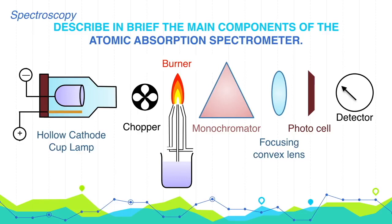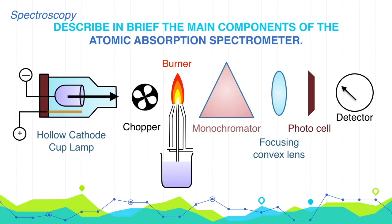Working. The cathode and anode are connected to the power supply, from which a potential of 500 to 1000 volts is applied. The gas in the bulb is ionized; cations move fast towards the cathode and remove atoms from it. These atoms strike gas ions, causing electron transitions from the ground state to the excited state. When the excited electrons return to the ground state, they emit characteristic radiations, which pass through the mica wall and fall on the rotating chopper. The chopper produces intermittent radiations incident on the unexcited atoms in the flame of the burner, which absorb the radiations.